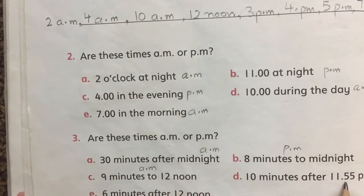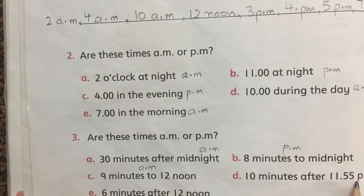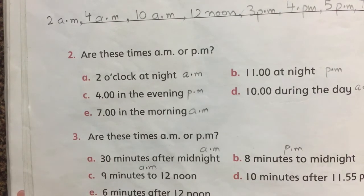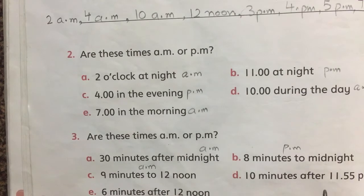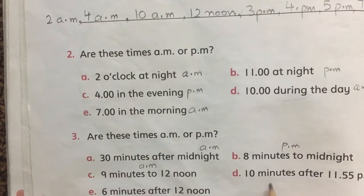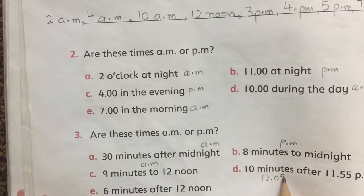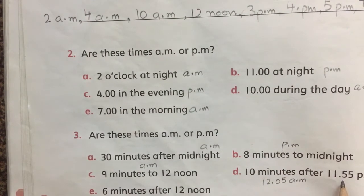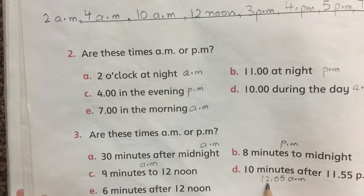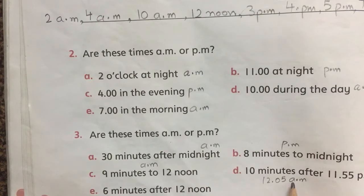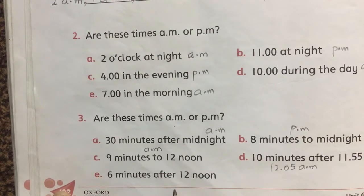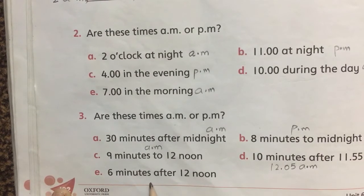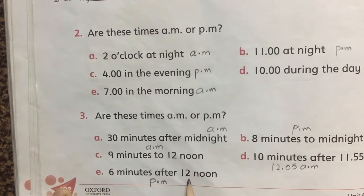10 minutes after 11:55 PM — 11:55 PM میں 10 minutes add کریں تو 12:05 ہو جاتا ہے — so the time becomes 12:05 AM. رات 11:55 میں 10 minutes add کریں تو 12 بج کر 5 minutes ہو جائیں گے، so that becomes AM. And last: 6 minutes after 12 noon — this is PM. اگر 6 minutes before 12 noon ہوتے تو AM ہوتا — so this is PM.